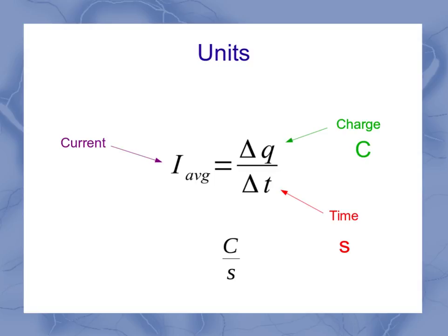So that coulomb per second is also redefined to be a new unit with a symbol A, where that A stands for amp or ampere. Ampere is a scientist who worked a lot on current, and we shorten it down to just amp a lot of times.